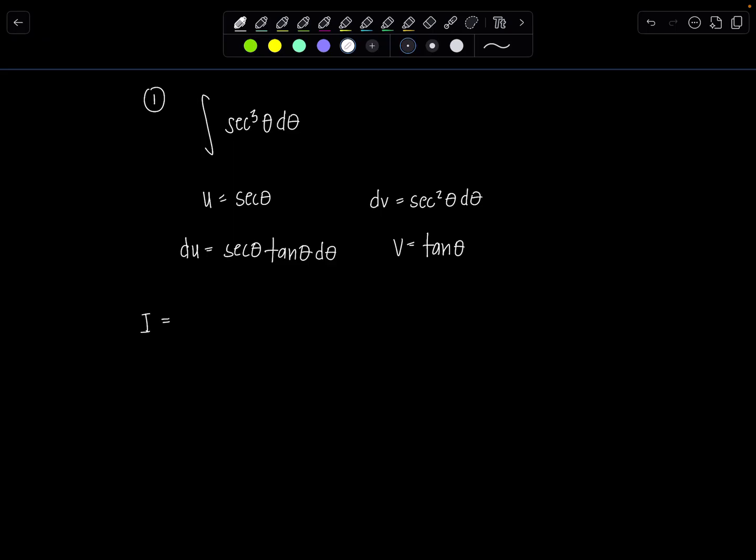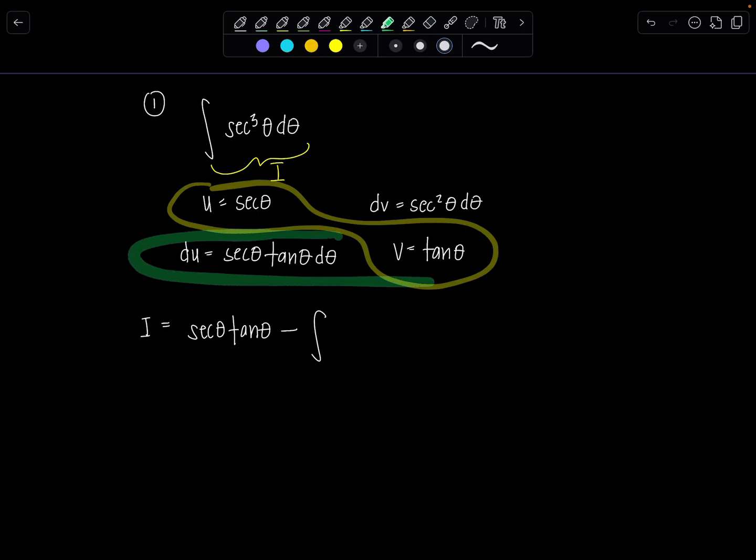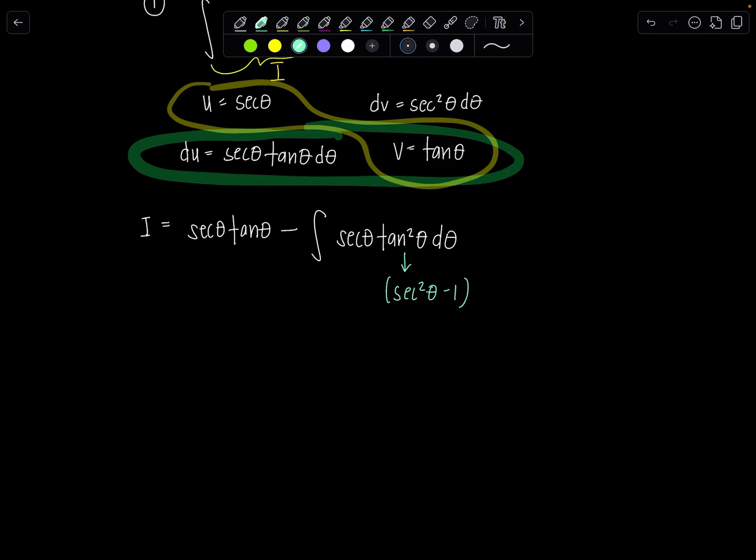i is equal to, by our by-parts formula, u times v. So that's going to be secant theta tan theta minus integral v du. So that would be integral of secant theta tan²θ dθ. And then for this one to boomerang, you don't have to do the by-parts formula again. Instead, you just replace tan²θ with sec²θ - 1. So then now let me distribute through that extra secant theta that's in the front of that integral. So i equals secant theta tan theta minus integral sec³θ dθ plus integral secant theta dθ. Are you all right? Was that too aggressive? I distributed the secant theta through whilst splitting the integral. Yep.